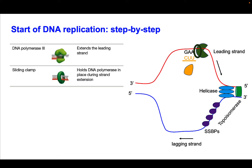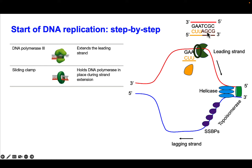Now DNA polymerase can act. It's going to be able to extend the leading strand and will assemble with a protein called the sliding clamp. This helps hold the DNA polymerase in place during extension so it won't fall off. Starting from the RNA primer, DNA polymerase 3 will start to add complementary sequences — an adenine for the thymine, a guanine for the cytosine, and so on — and it'll polymerize on the leading strand going in the direction of the helicase.